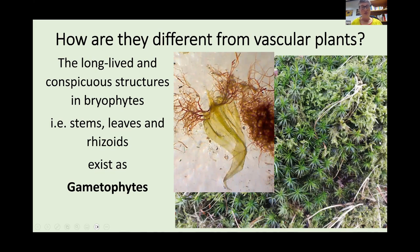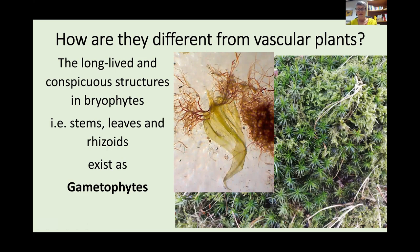Before we talk about bryophytes in detail, I just want to quickly touch on what makes bryophytes different from vascular plants. One interesting thing about mosses and liverworts is that the long-lived part of the plant — the plant you actually see all the time — is a gametophyte: a structure with only one set of chromosomes. The gametophyte generation is the long-lived one. In vascular plants it's the other way around — the long-lived part is the sporophyte, which has two sets of chromosomes.